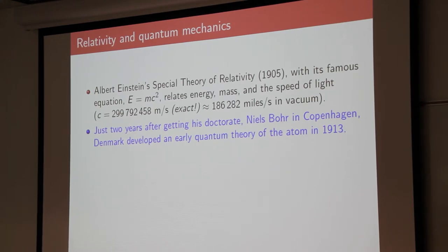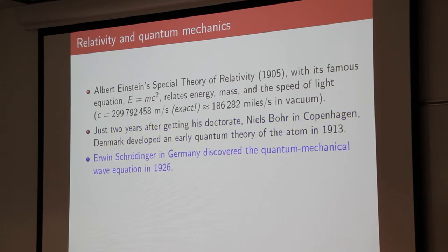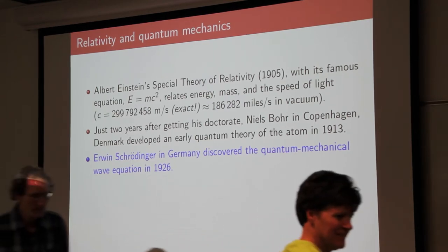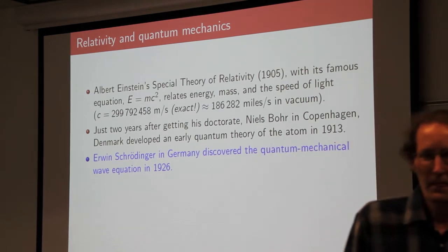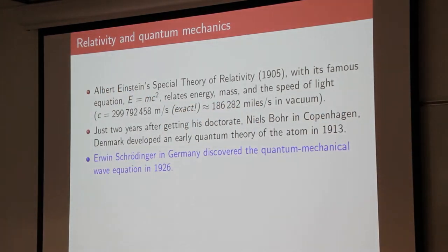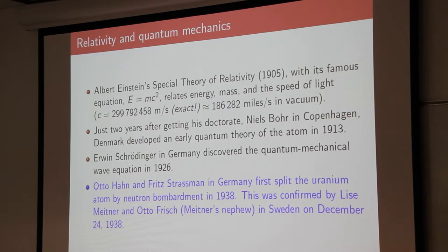Just eight years later, a Danish young scientist named Niels Bohr, then in his mid-twenties, developed a quantum theory of the atom. And 13 years after that, Erwin Schrödinger — actually Austrian but working in Germany — discovered what we now call the Schrödinger wave equation, which is the quantum mechanical wave equation we deal with today.